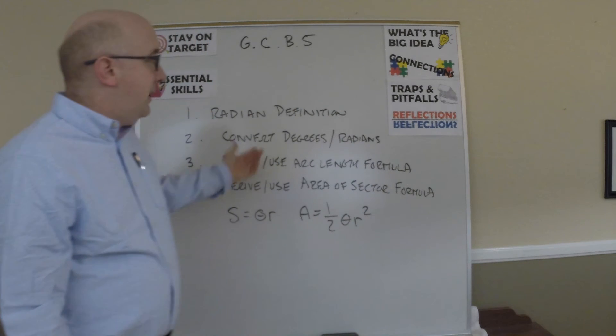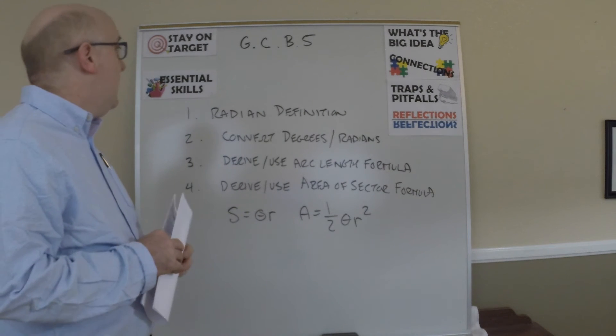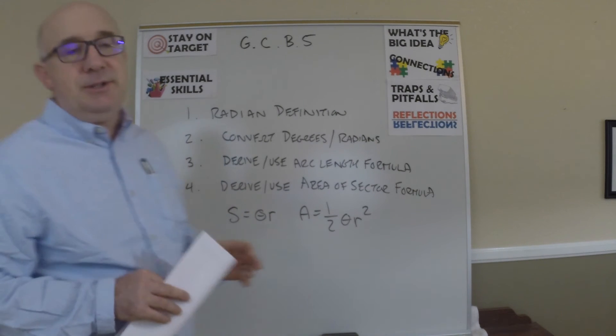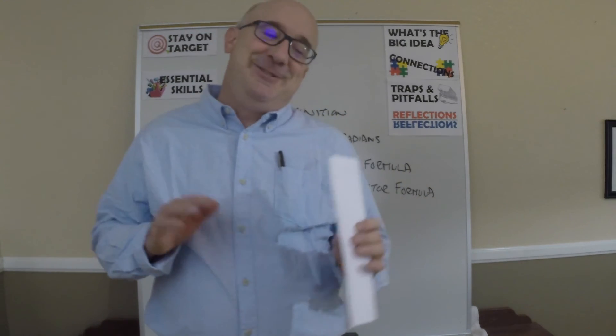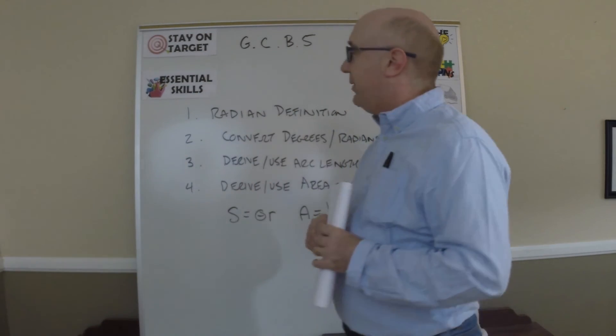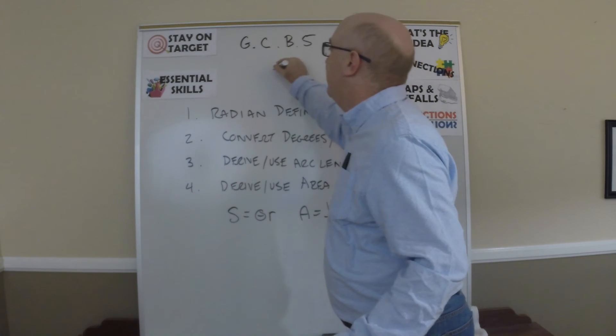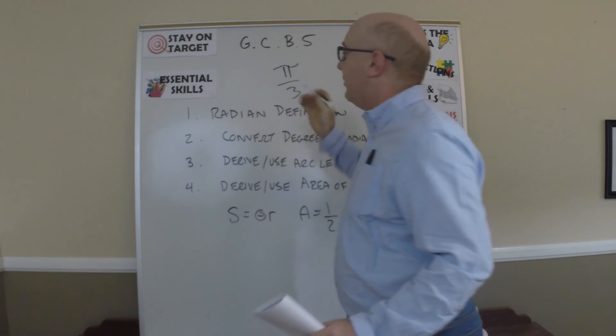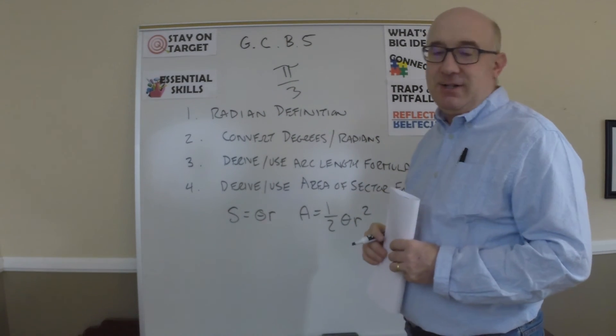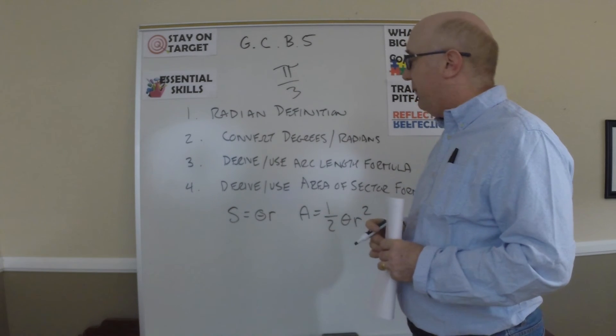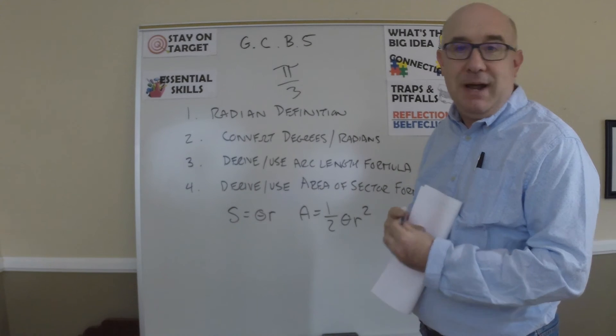Nice connections to similarity, nice connections to trigonometry. I guess the pitfalls and the traps here are mostly the use of pi. Students aren't really happy with an angle being pi over 3. They're not really happy with that, but they get used to it and actually becomes a very powerful link to future use of angles in upper mathematics.